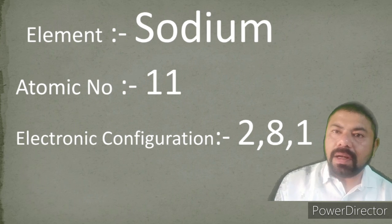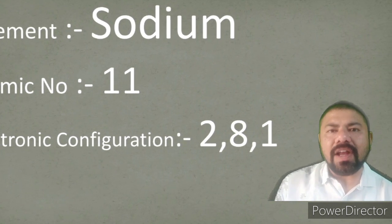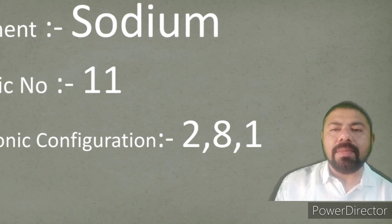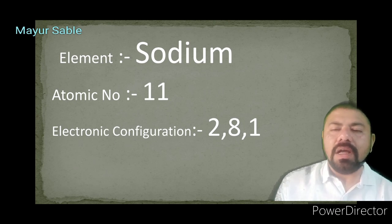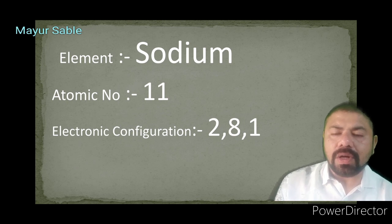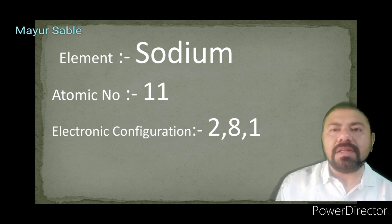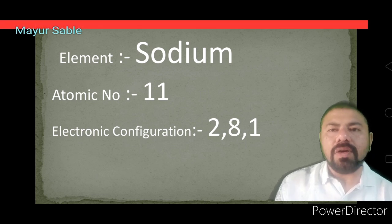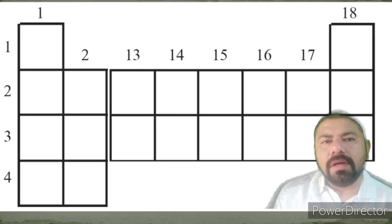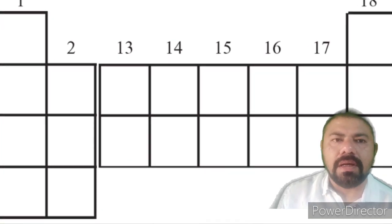The atomic number is the number of protons present in the nucleus. Since an atom is electrically neutral, the number of positively charged protons equals the number of negatively charged electrons revolving around the nucleus. Therefore, we can determine the electronic configuration of any atom from its atomic number. The valency of an element is determined by the number of electrons present in the outermost shell of each atom.